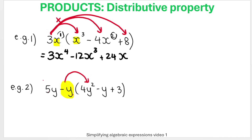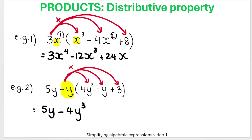Take that negative Y and multiply it into the bracket with all three terms. The 5Y just drops down. Negative Y times 4Y squared: negative times positive is negative 4, then Y cubed — adding exponents, one plus two is three. Negative Y times negative Y: negative times negative is positive Y squared. Then negative Y times three is negative 3Y.